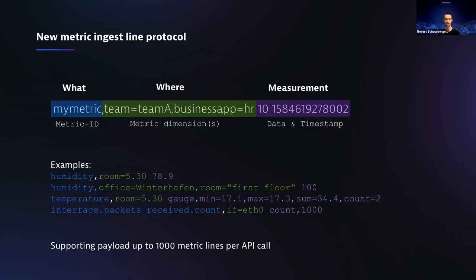The line protocol is always the same regardless of channel — whether you use the public REST interface, the Dynatrace Ingest tool, or the OneAgent. It always looks the same across all the different channels. One line describes one measurement of a metric in time.